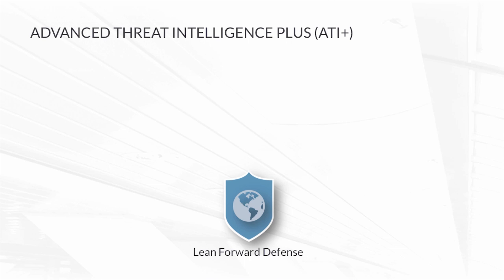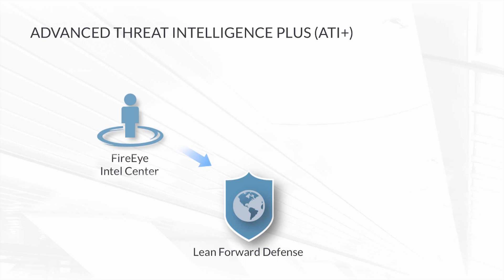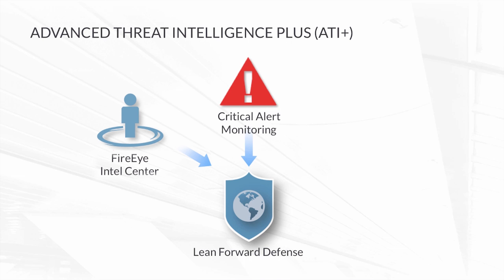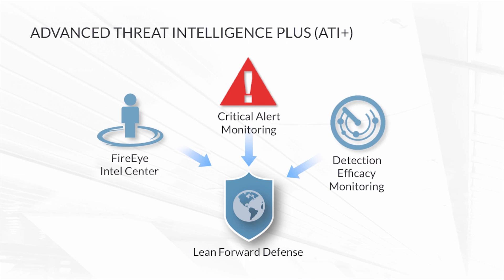That's where ATI Plus comes in, and ATI Plus has three key components. The first is access to our FireEye Intelligence Center, a repository of rich intelligence information on all of the different adversaries that we track. It also comes with critical alert monitoring, meaning you have an extra set of eyes watching over your environment from the FireEye Security Operations Centers. And finally, we monitor the FireEye technology deployed within your environment to monitor for problems that might affect detection efficacy.